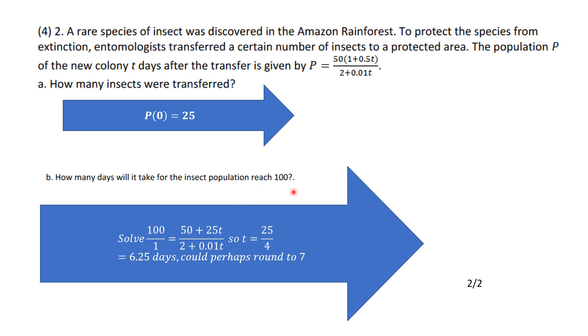How many days will it take to reach 100? Well, that's the population is 100. So, I'm solving 100 is equal to and then I solve this for T. So, I get T is 25 over 4. That ends up being 6 and 1 fourth days or you may say it takes 7 days. I'll count either one of those correct, but this is all correct.